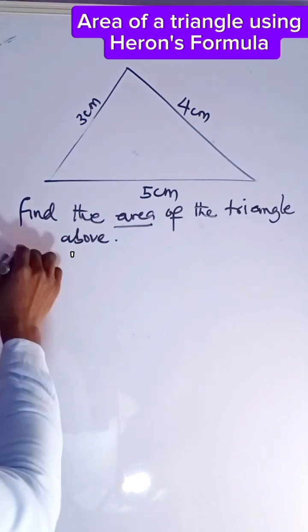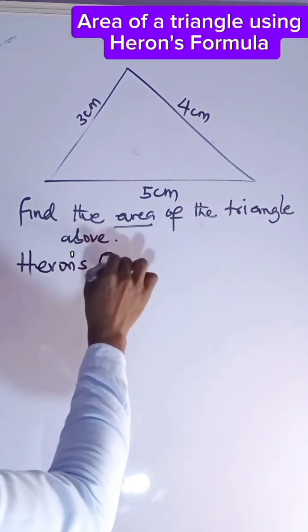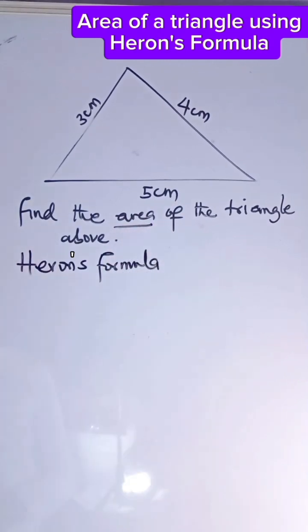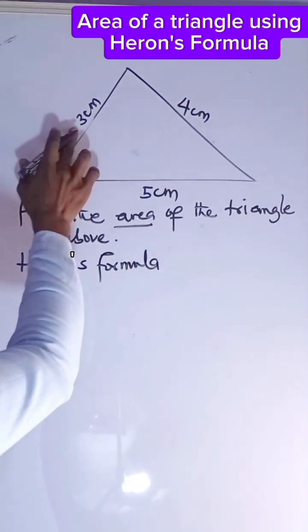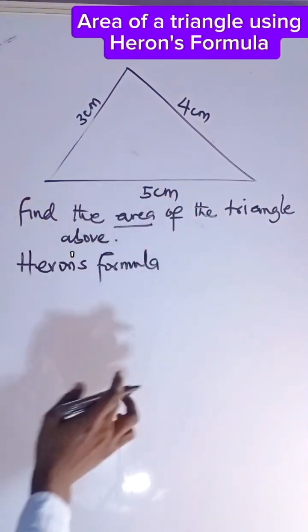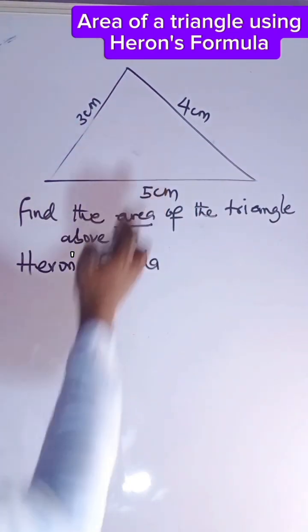We are making use of what I call Heron's formula. Now, why do we use Heron's formula? When you only have sides of a triangle given and there is no height provided.